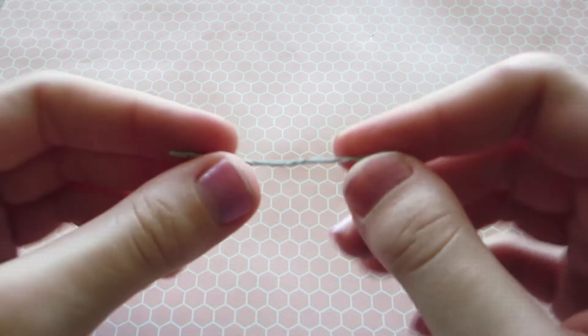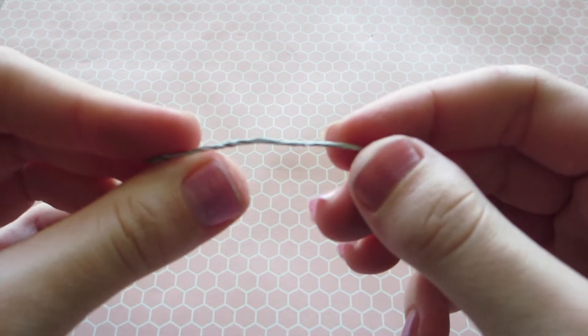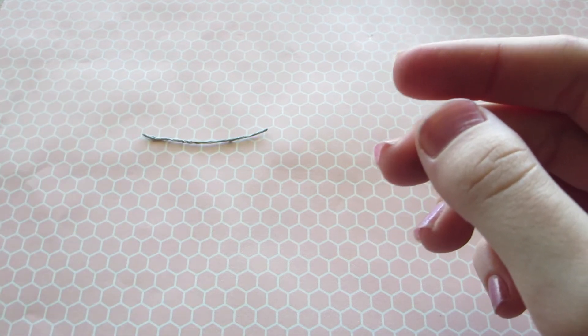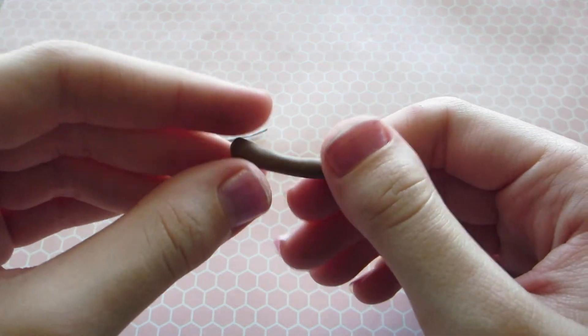The first thing you're going to want to do is take a ring base. I didn't have one, but you can buy one at Hobby Lobby. I just made one out of wire.